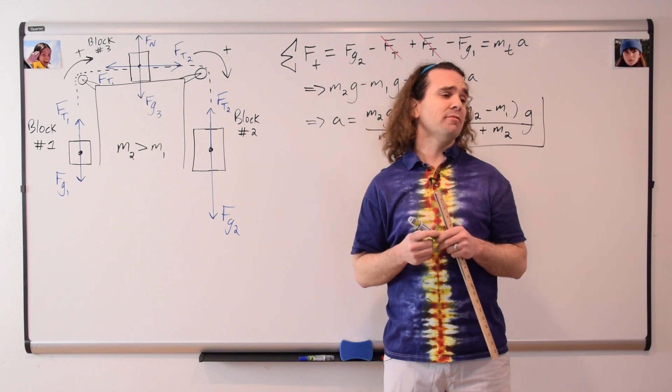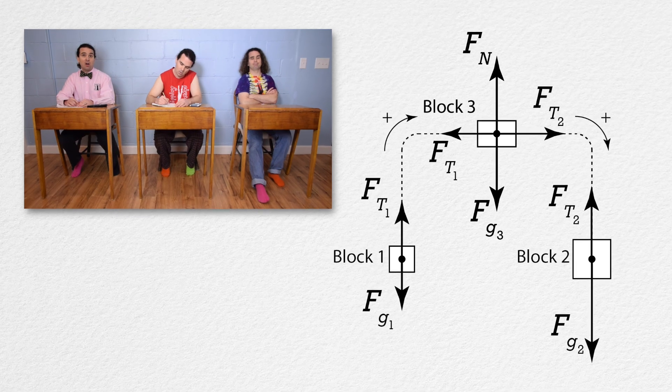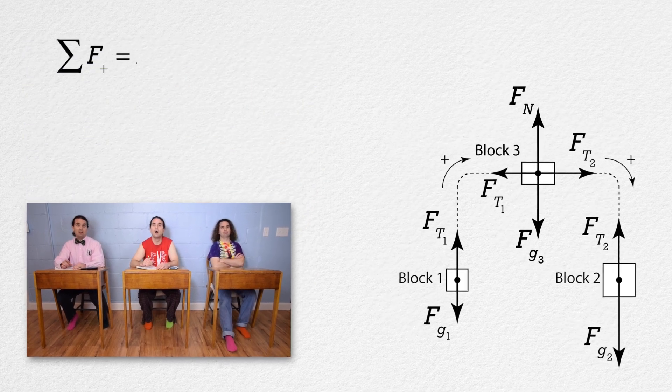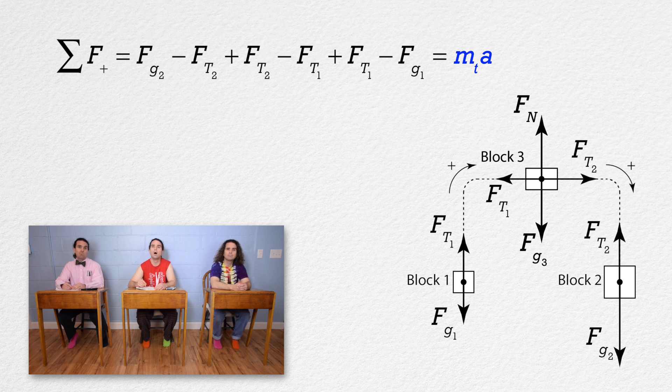Billy, could you please solve for the new acceleration of the system? The net force on all three blocks, in the same positive direction as before, is force of gravity 2 minus tension force 2 plus tension force 2 minus tension force 1 plus tension force 1 minus force of gravity 1, which all equals the total mass times acceleration. All the tension forces cancel out, and we can substitute in the same equations as before, only now the total mass also includes the mass of block 3.